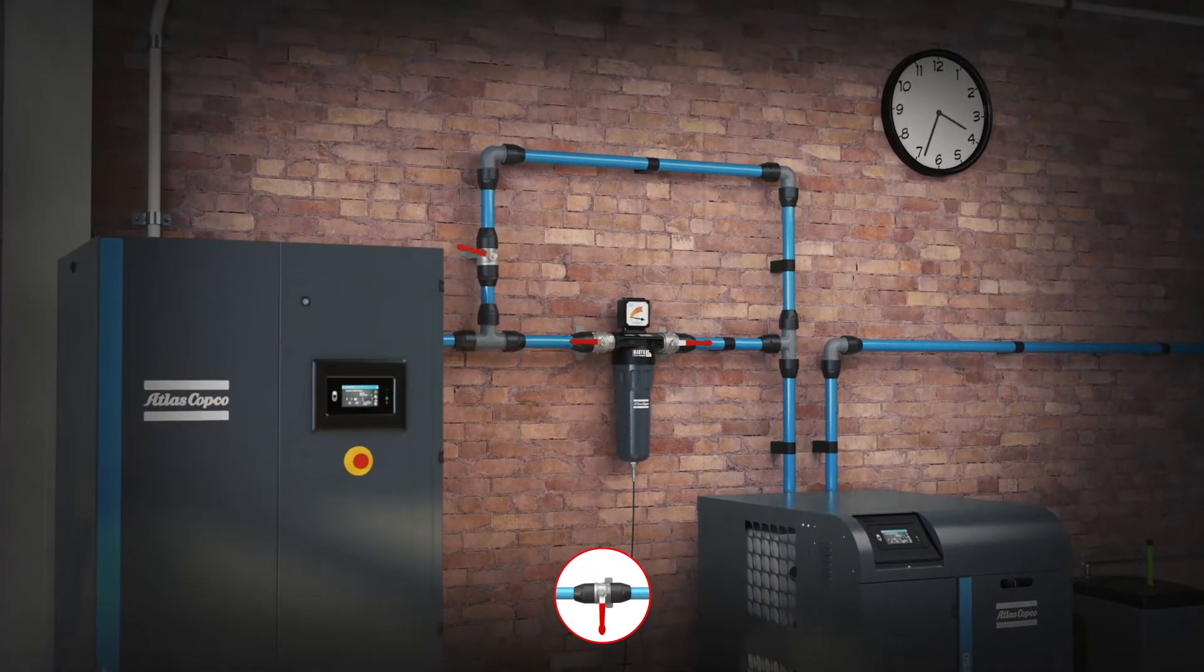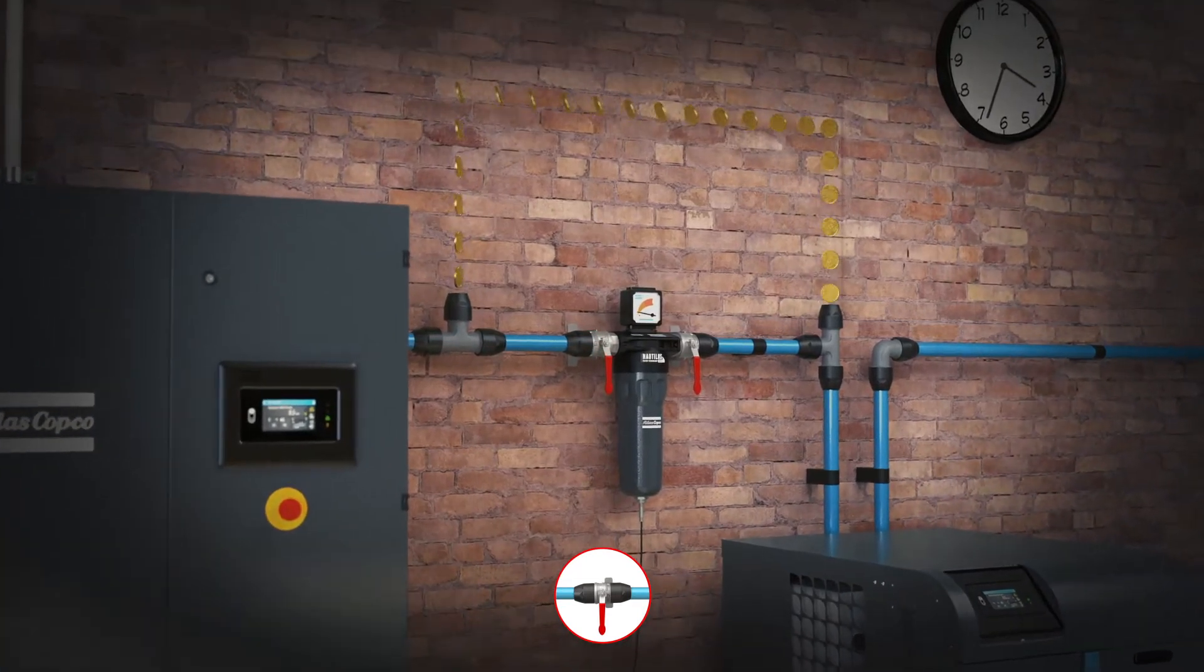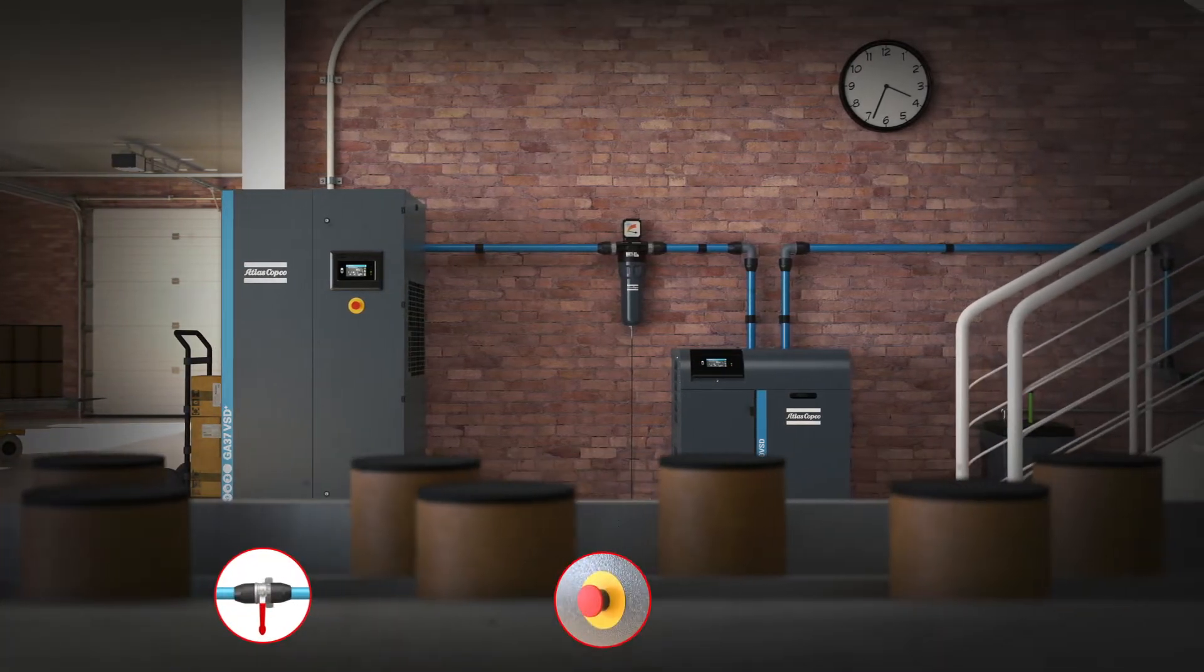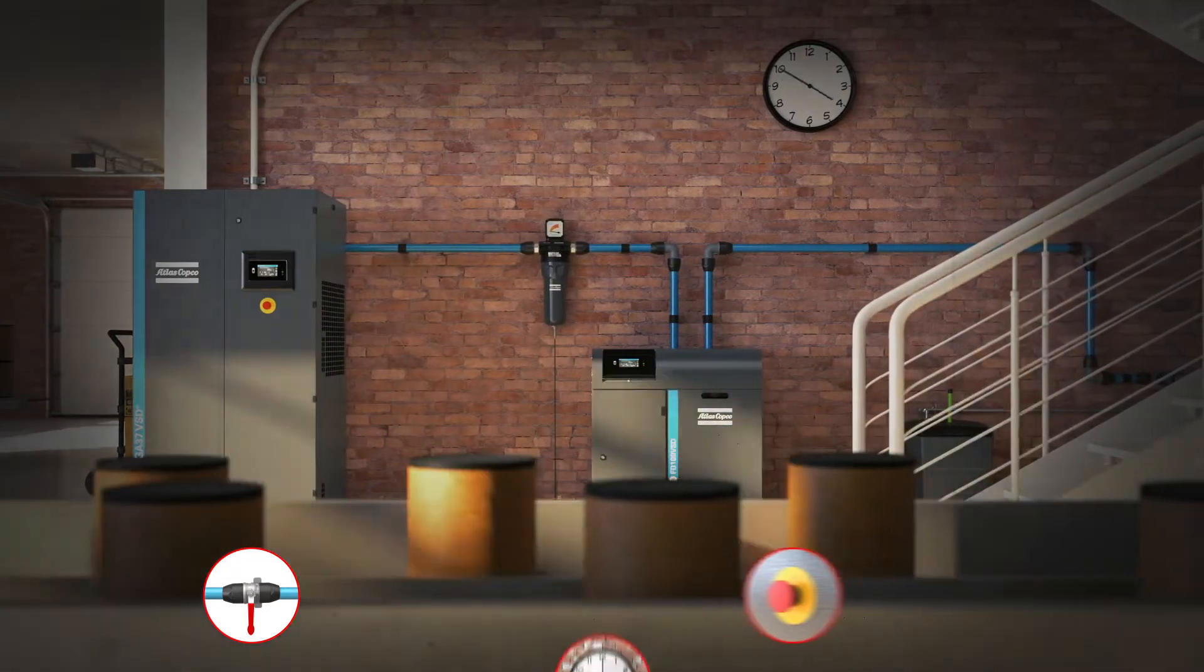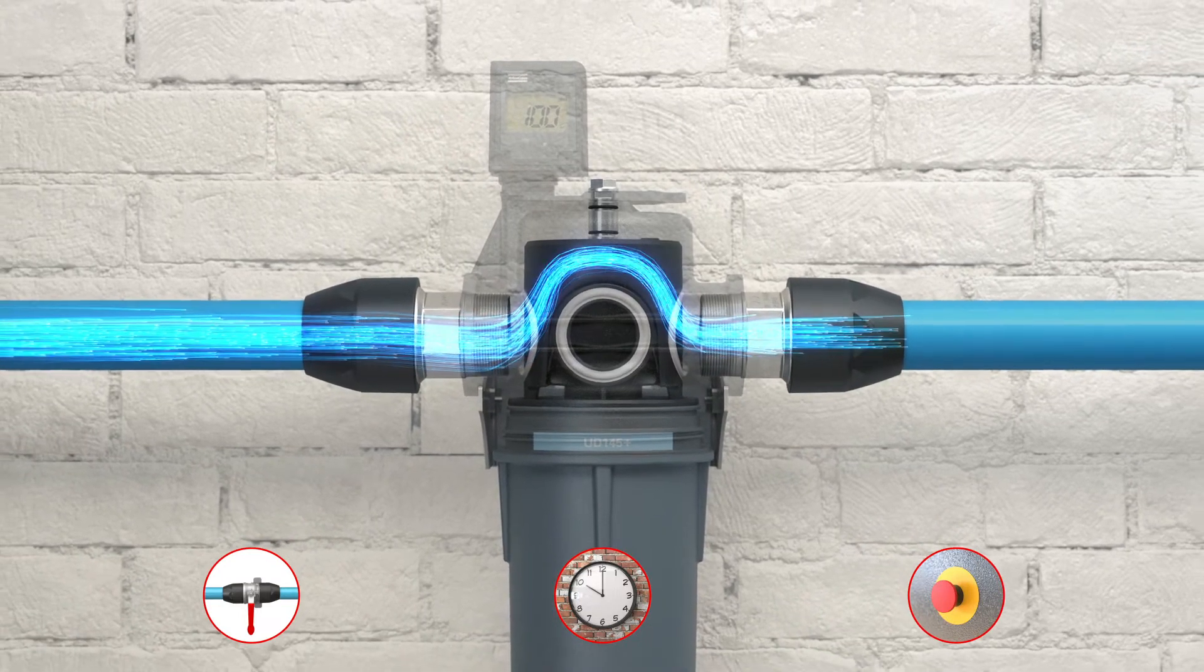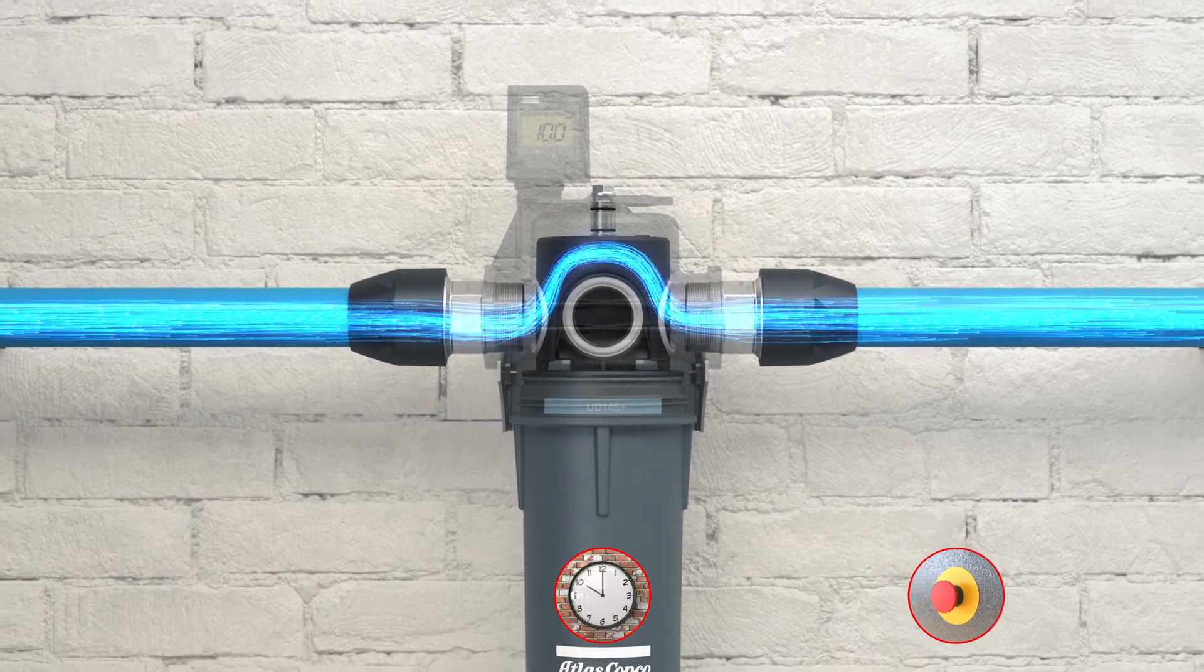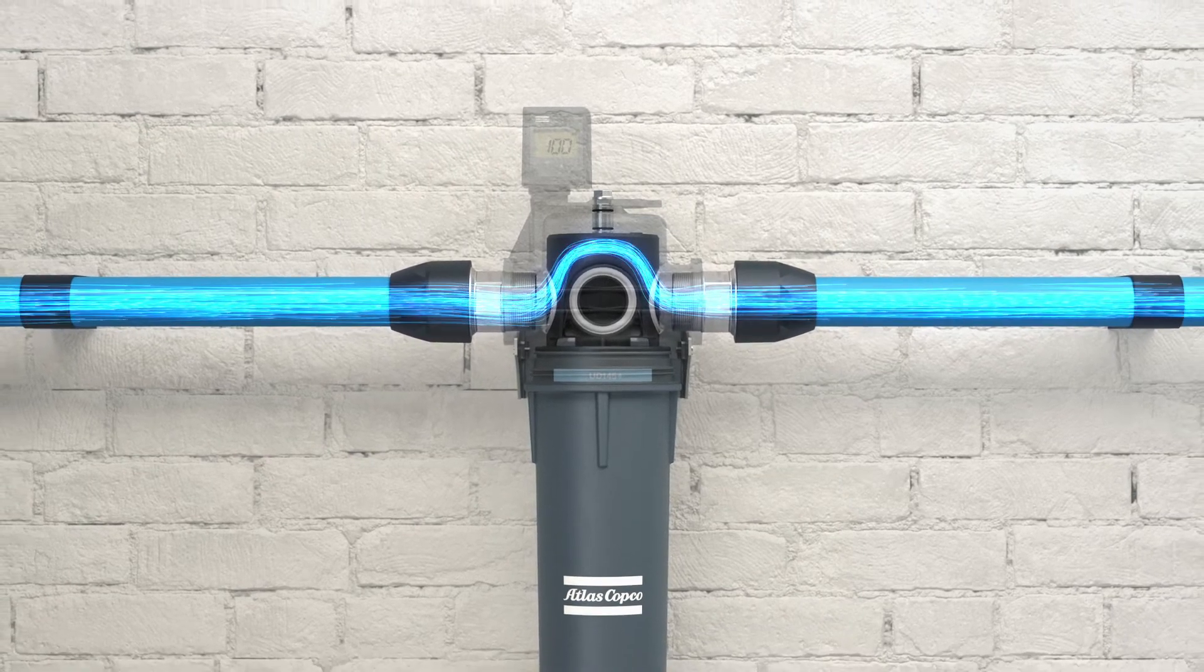Until now, installing an external three-valve bypass was the only way to service your filters without interrupting your airflow. Without this costly bypass, you simply had to shut down your entire air system for filter element replacement during production or after working hours. The impasse routes the air through the filter head during maintenance. No need to install extra piping around the filters, no need to halt production, no need to schedule filter maintenance after working hours. It's truly seamless service for the first time ever for maximum cost savings.